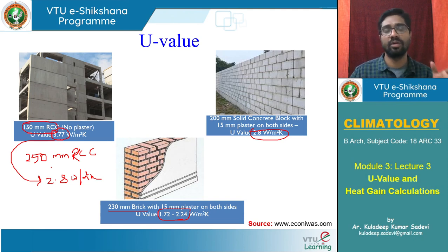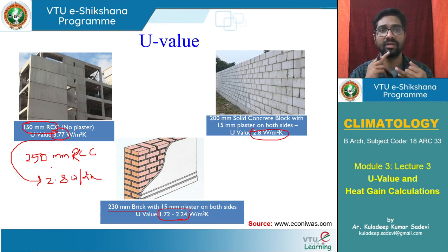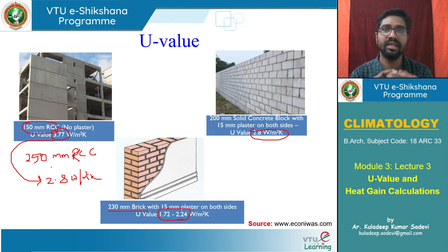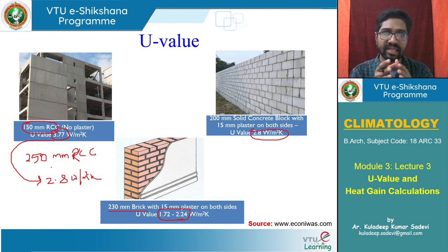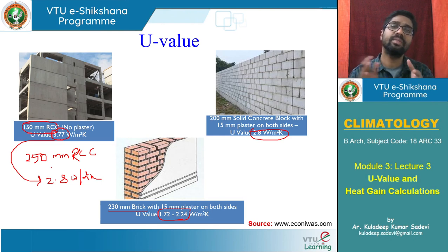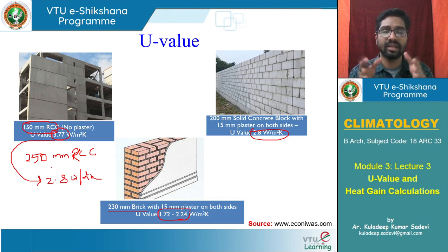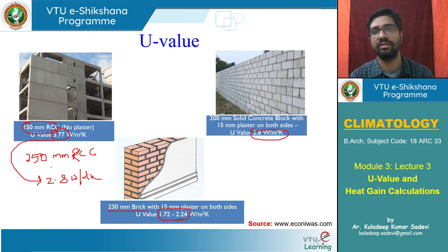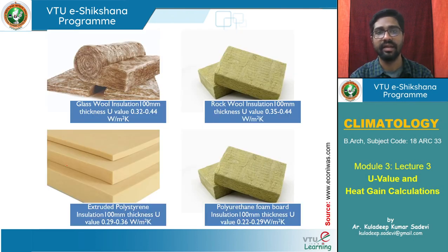Instead of increasing the thickness of the same material, we can add another material as an extra layer that offers better resistance. These two or more materials acting together as one material offer better resistance to heat flow. These are insulating materials. There are four different insulating materials generally available: glass wool, rock wool, polyurethane foam board, and expanded/extruded polystyrene.